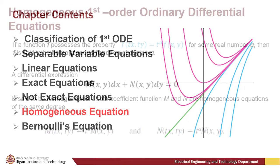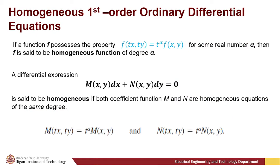If a function f possesses the property f(tx, ty) = t^α · f(x, y) for some real number α, then f is said to be a homogeneous function of degree α. If you have a differential expression of M(x,y)dx + N(x,y)dy = 0, it is said to be homogeneous if both coefficient functions M and N are homogeneous equations of the same degree.